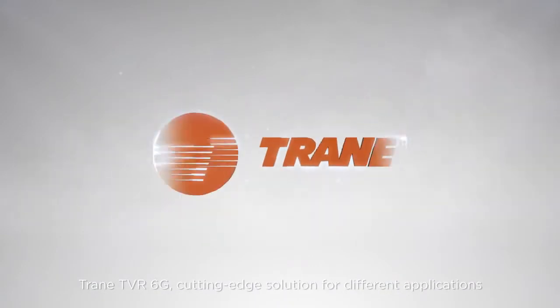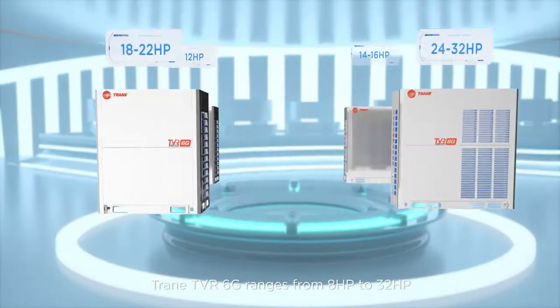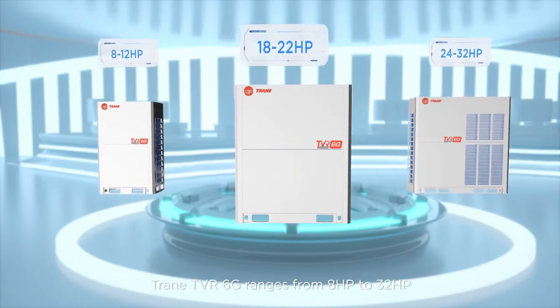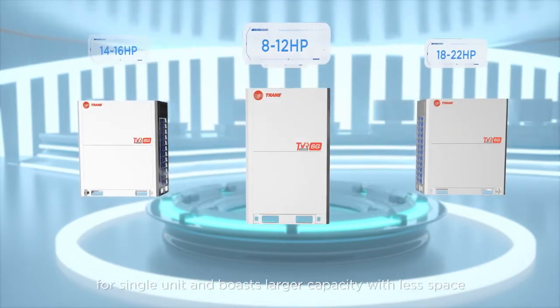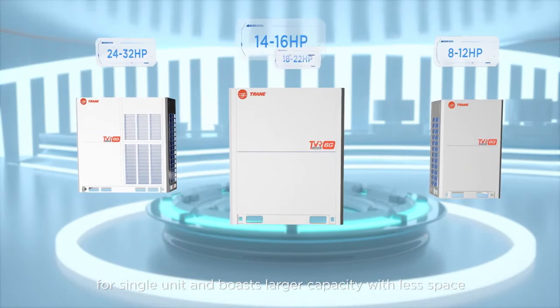TrainTVR 6G is a cutting-edge solution for different applications. It ranges from 8 HP to 32 HP for a single unit and boasts larger capacity with less space.